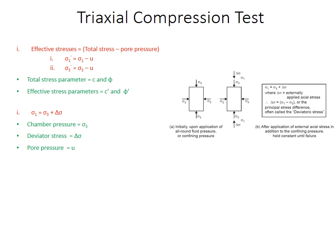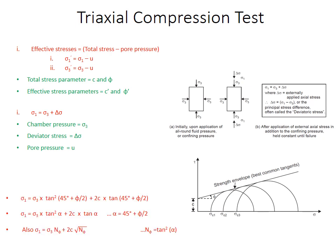The last important thing which is helpful while solving problems is this strength envelope. Basically in this test we do a series of tests for increasing pressures of sigma 3, and what we get at the end is a series of Mohr circles. You join them tangentially, you will get a strength envelope, and from there you can get the values c and phi. Also the same formulas are applied here.